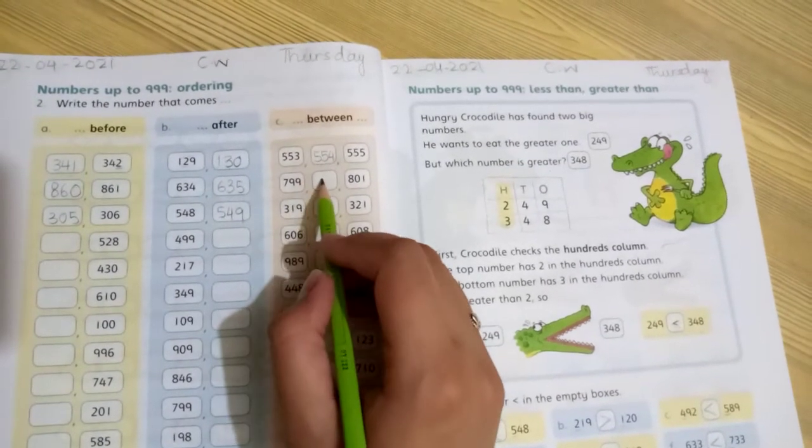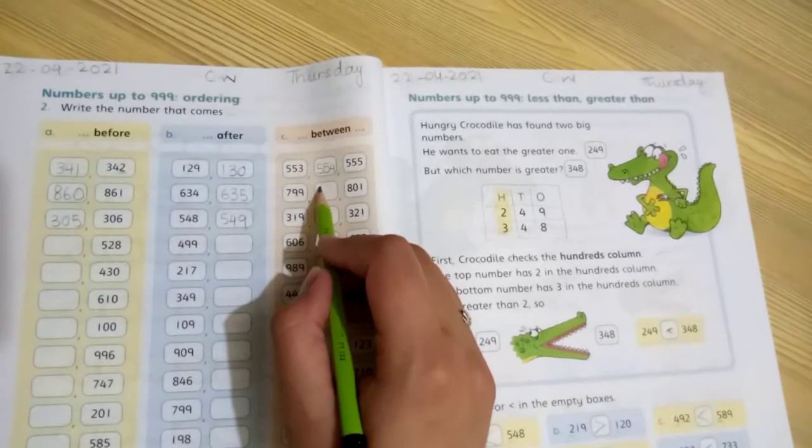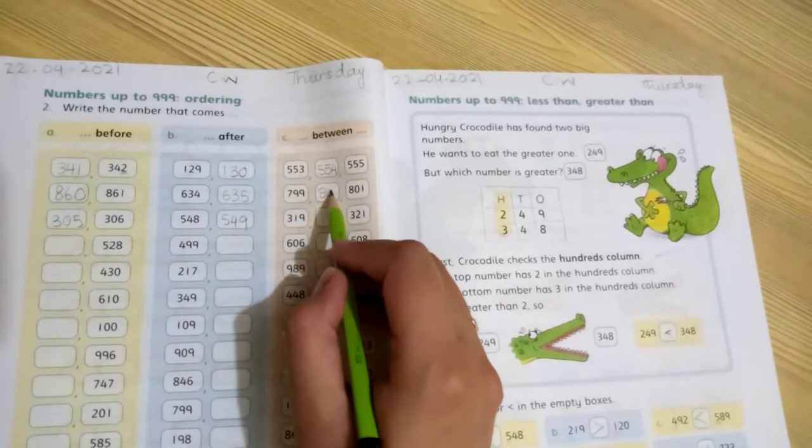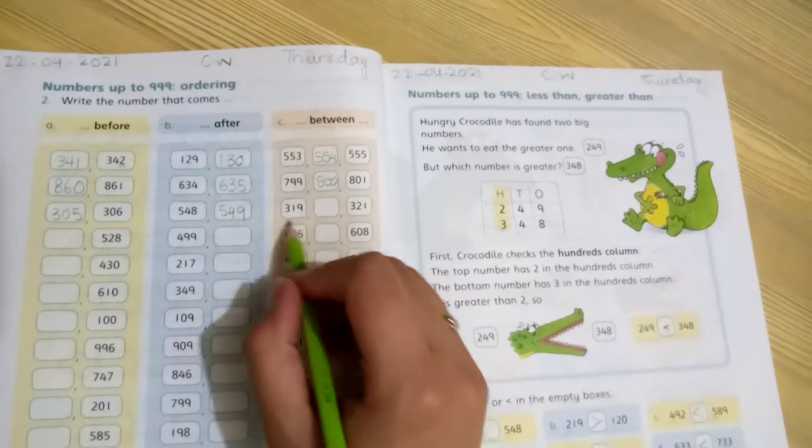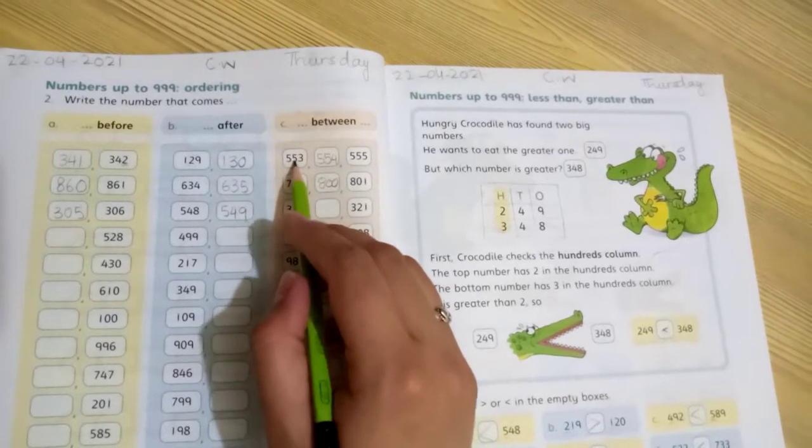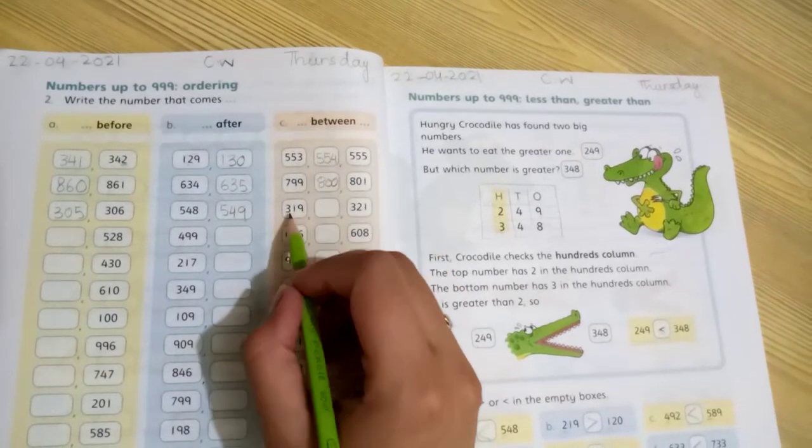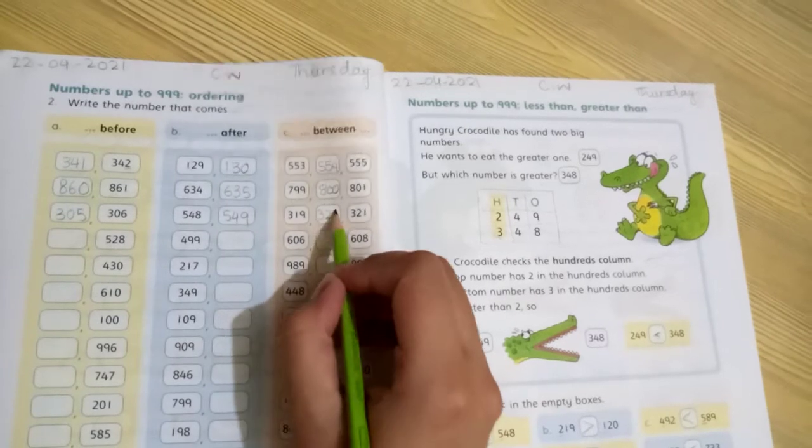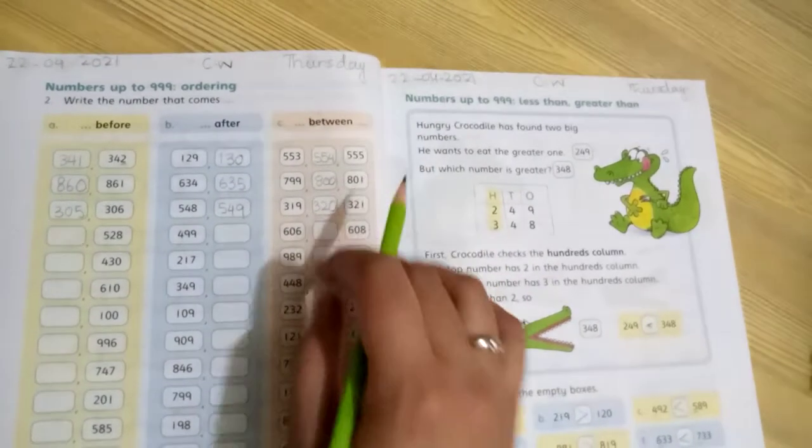Now, numbers that come between. What happens in between? You can write before and after, so after is more easy. 799, then 99, next 100, then 800. Then what comes after 553, 554, after 319, 320. This way the remaining questions you will solve this whole page.